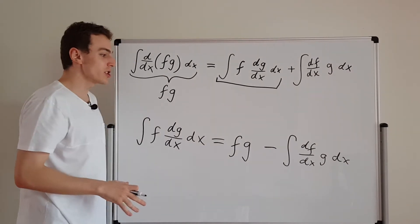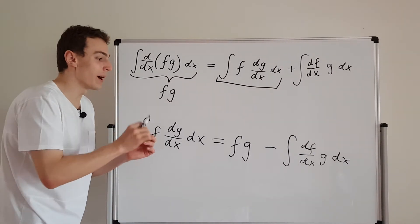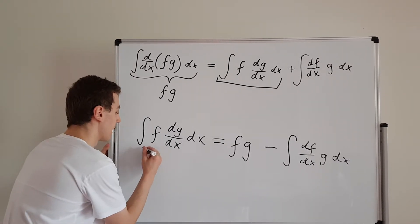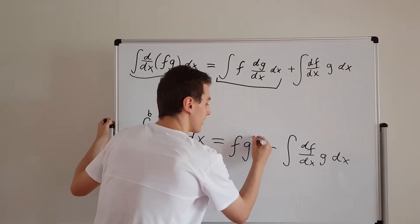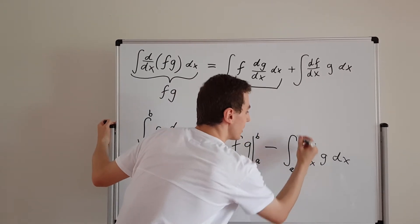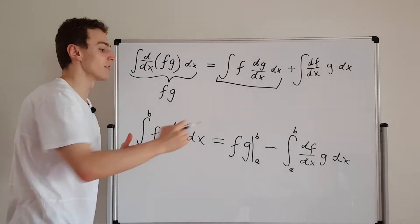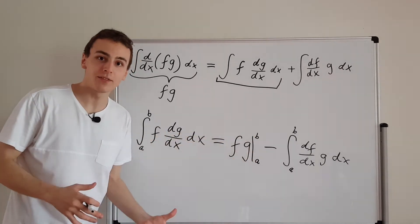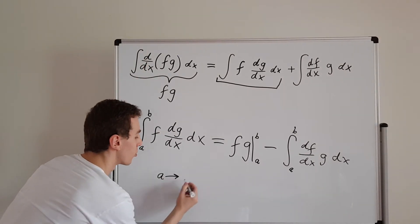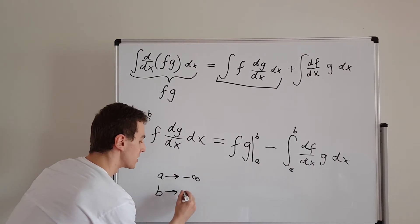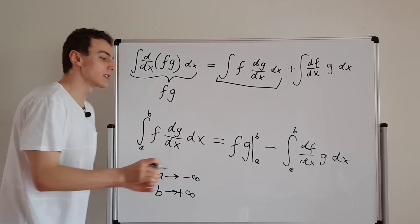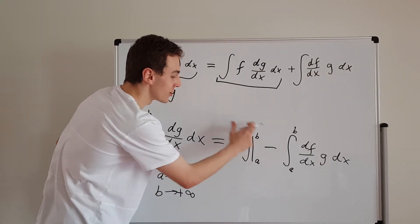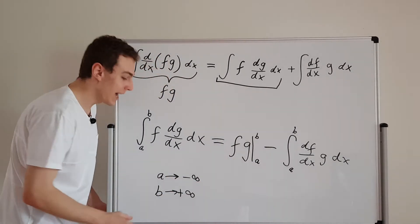Now, what if we have boundary conditions — what if we're evaluating definite integrals from some value a to some value b? We can add these bounds of integration to all the terms, evaluating from a to b. This is what we use in quantum mechanics, and a and b are often going to be minus infinity and plus infinity. So if we let a go to minus infinity and b go to plus infinity, the integral covers the entire domain of a wave function.